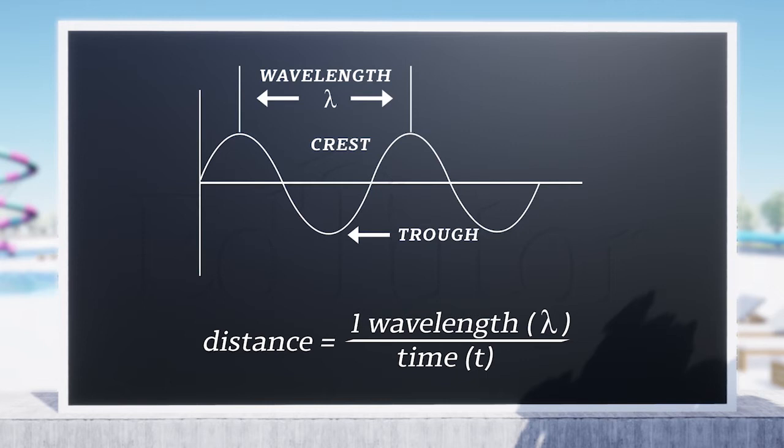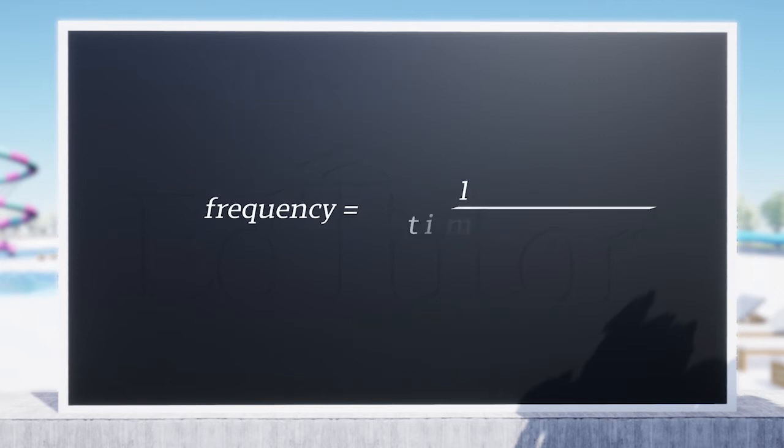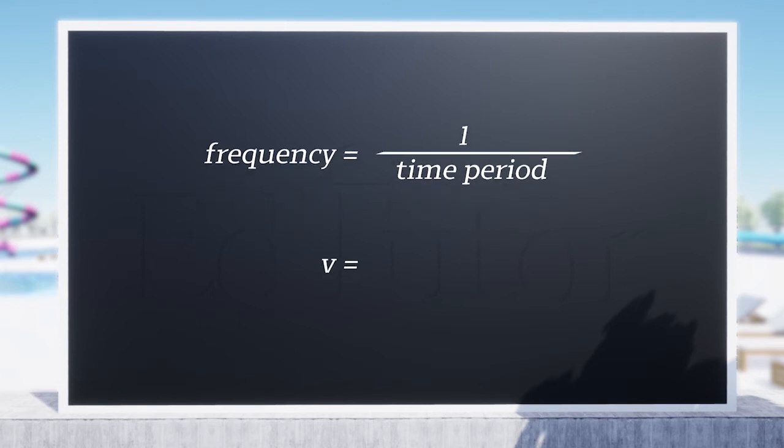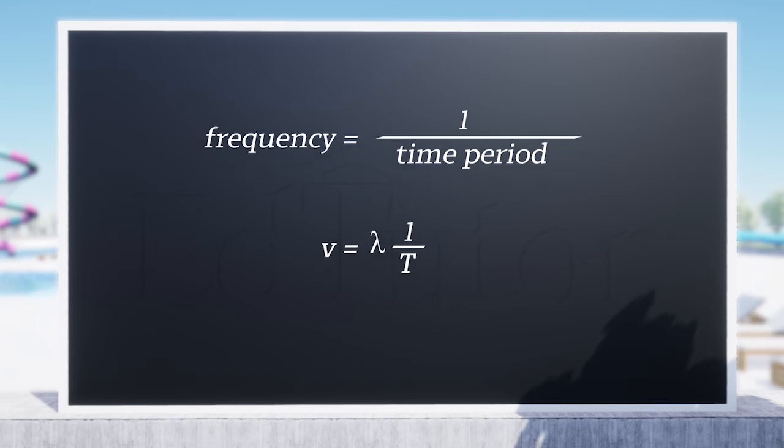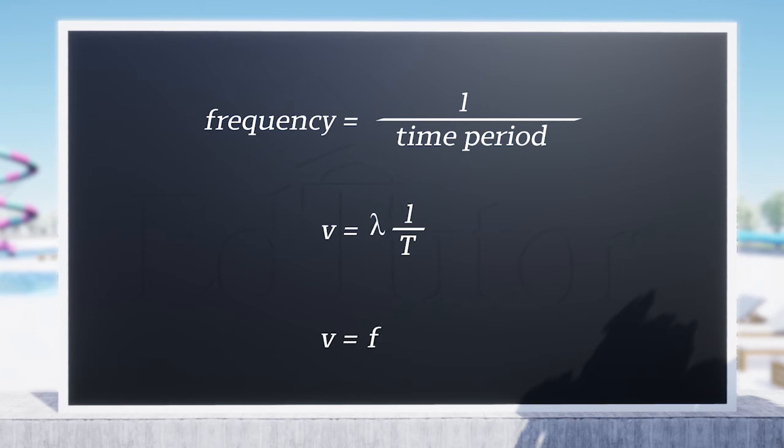If we recall the previous topics, frequency of a wave is defined as 1 upon time period. So we can rearrange the equation of velocity as v equals lambda multiplied by 1 upon t. We replace t by frequency and the formula for velocity becomes v equals frequency f multiplied by wavelength lambda.